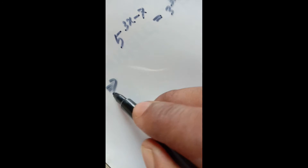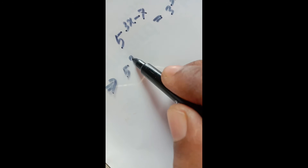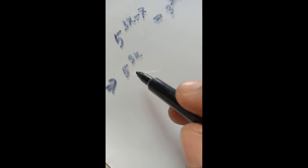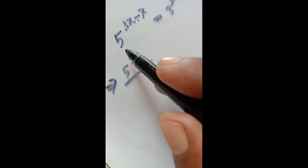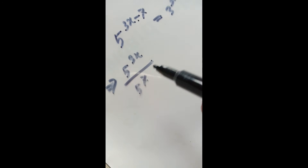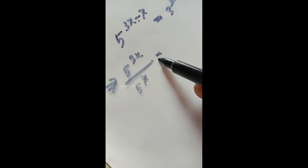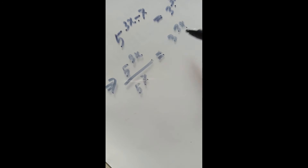Now we separate the exponents. We write 5 to the power 3x divided by 5 to the power 7, equal to 3 to the power 3x divided by 3 to the power 7.